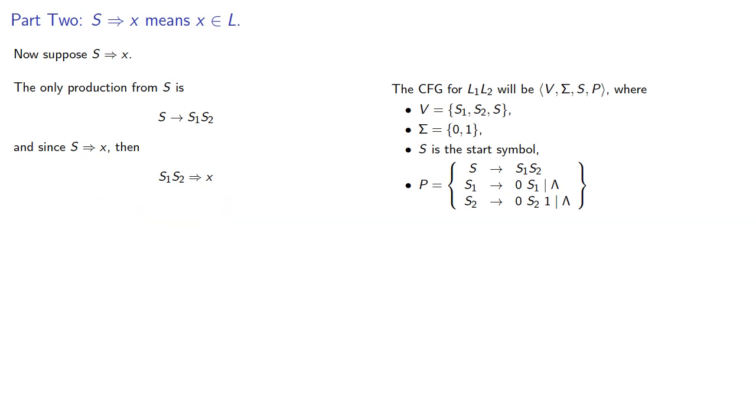But s1 produces something in our first language, and s2 produces something in our second language. So x is the concatenation of something from L1 with something from L2.